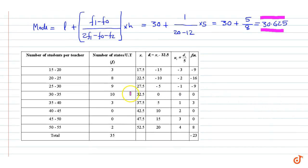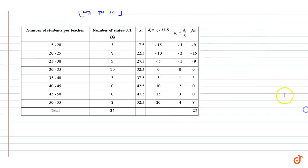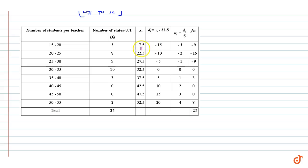We construct a table where the first two columns are replicated from the given table. xi represents the midpoint of the number of students per teacher in the ith interval. In the first interval 15–20, the midpoint is 17.5; in the second interval 20–25, the midpoint is 22.5, and so on. Now we will calculate the deviations from the assumed mean.